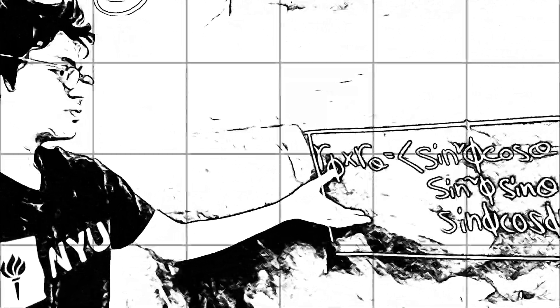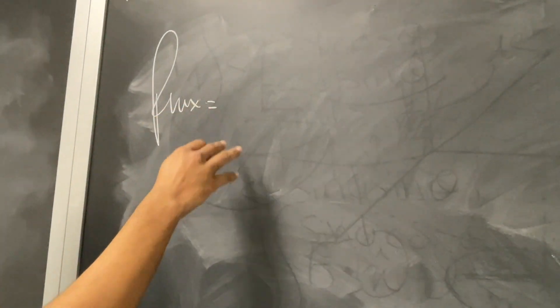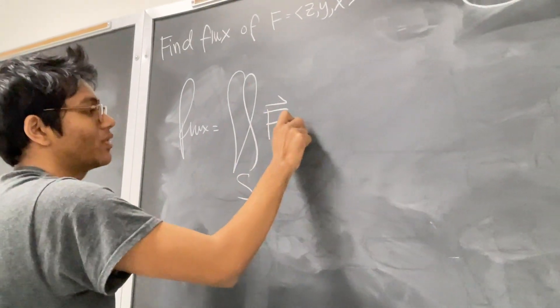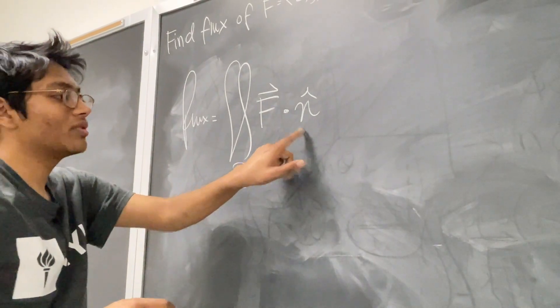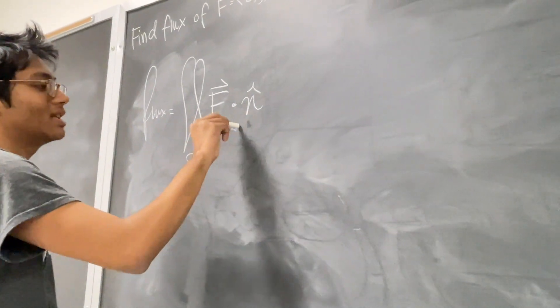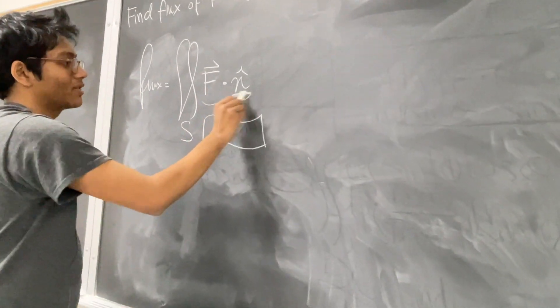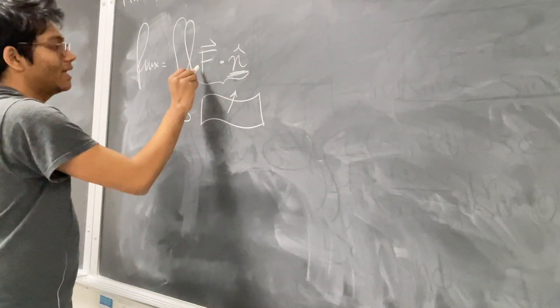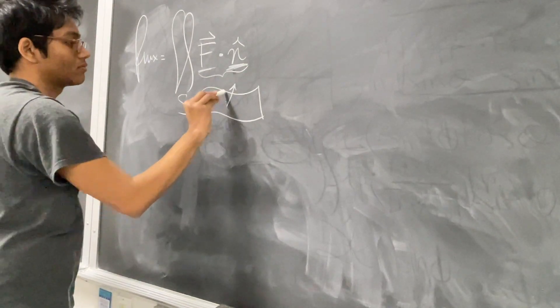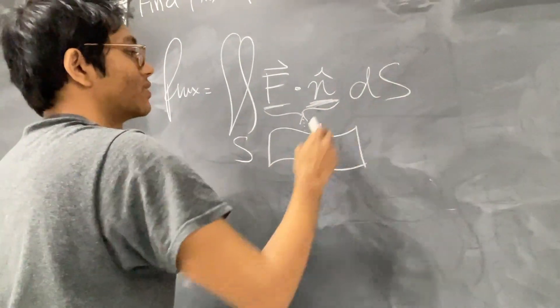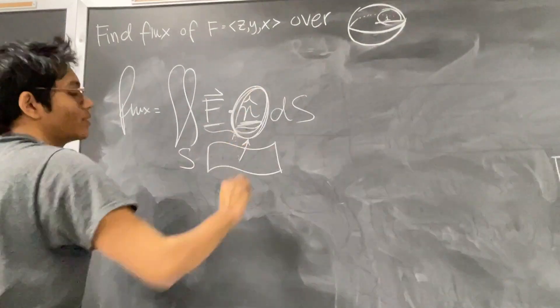Let's pick up where we left off. In the previous episode, we found the cross product. Remember that the flux of vector fields over a surface is given by the double integral over the surface of the vector field dotted with the normal vectors of our surface. This is a picture saying that if you have some surface with a normal vector and a force vector, you take their dot product — that gives you the flux — and you do that over the entire surface. So we just found, in the last episode, what this is.